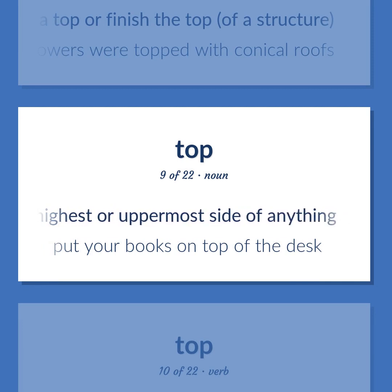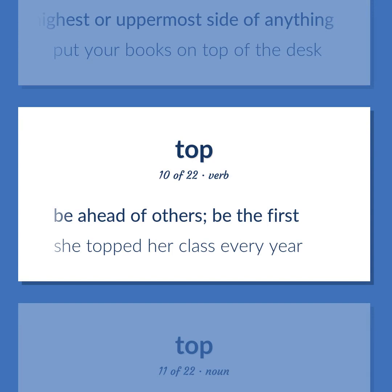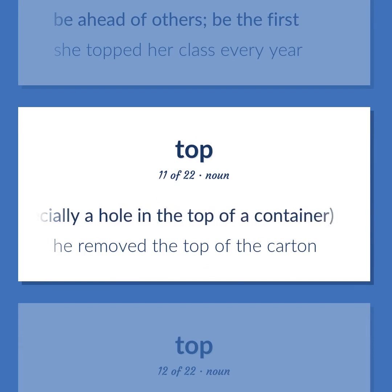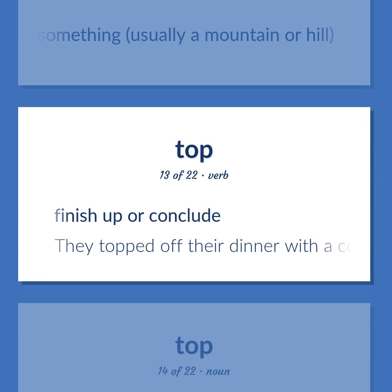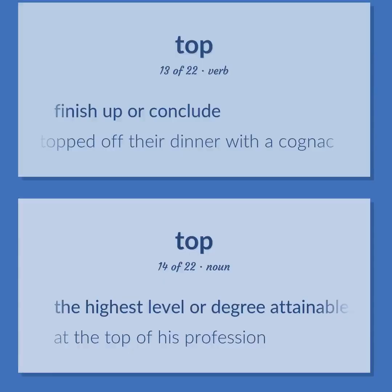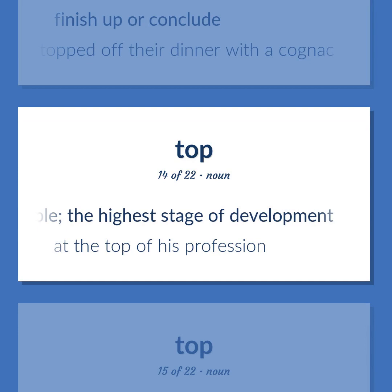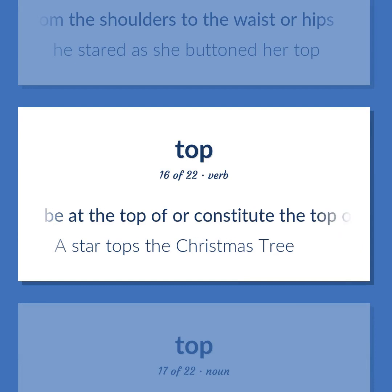Top: The highest or uppermost side of anything — put your books on top of the desk. Be ahead of others; be the first — she topped her class every year. Covering for a hole, especially a hole in the top of a container — he removed the top of the carton. The top or extreme point of something, usually a mountain or hill. Finish up or conclude — they topped off their dinner with a cognac. The highest level or degree attainable — at the top of his profession. A garment, especially for women, that extends from the shoulders to the waist or hips — he stared as she buttoned her top. Be at the top of or constitute the top or highest point — a star tops the Christmas tree.